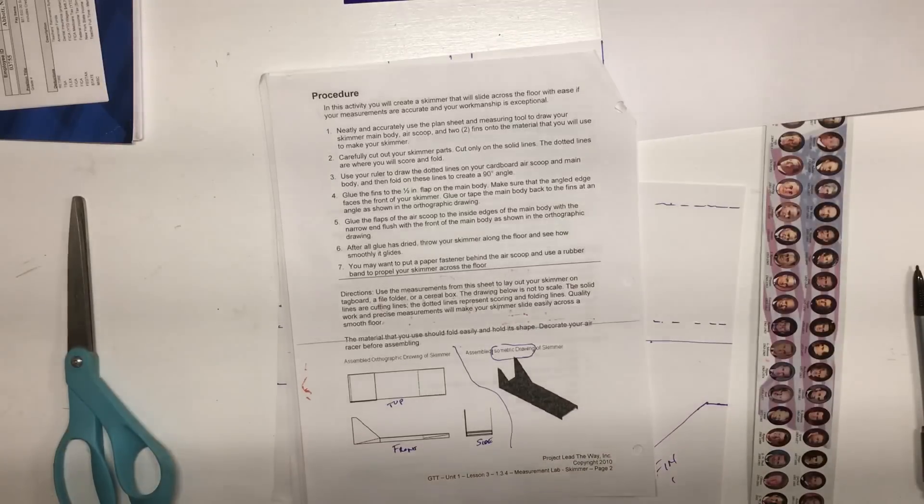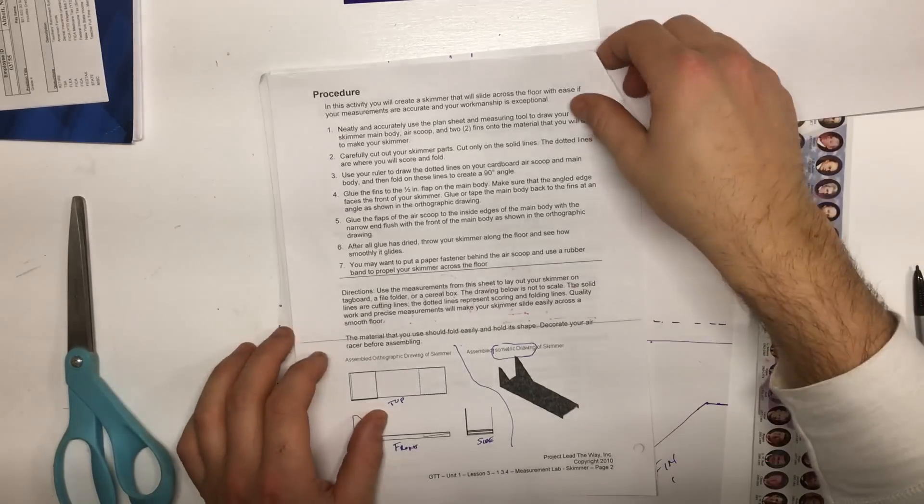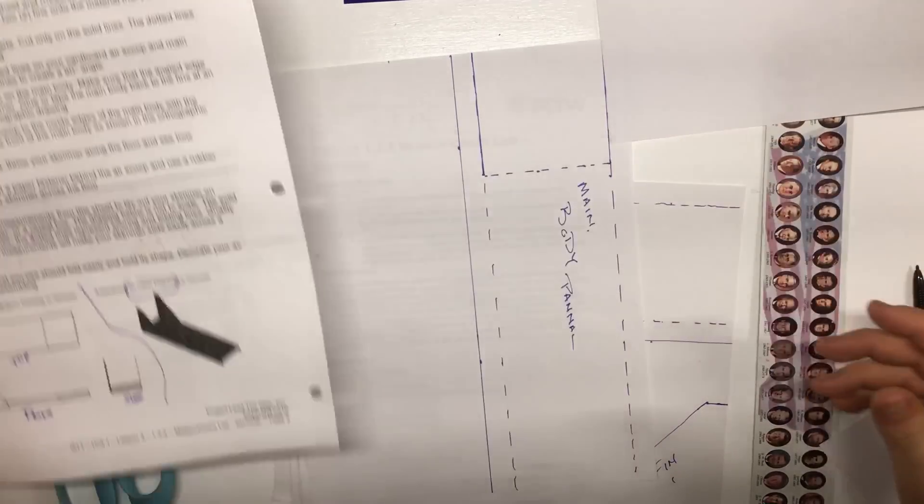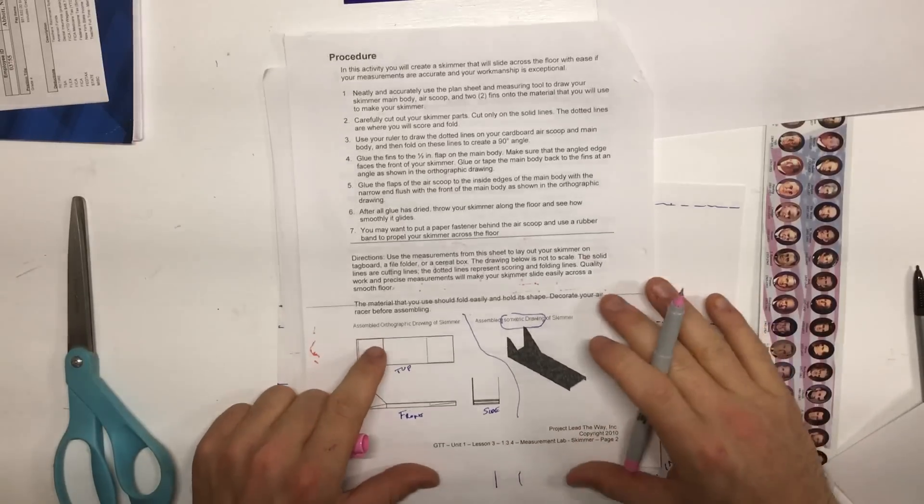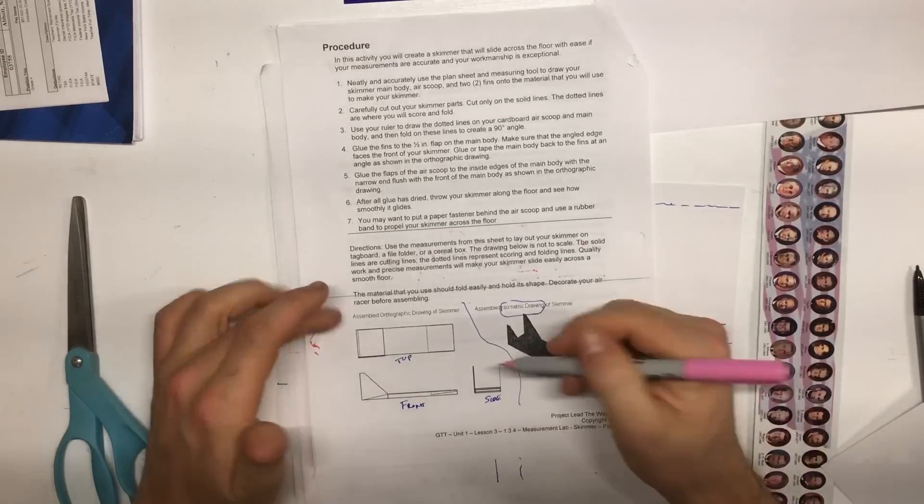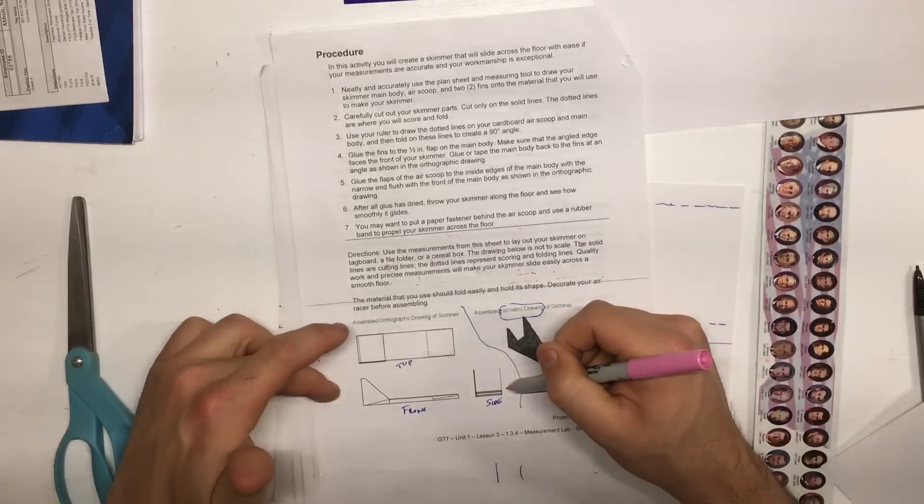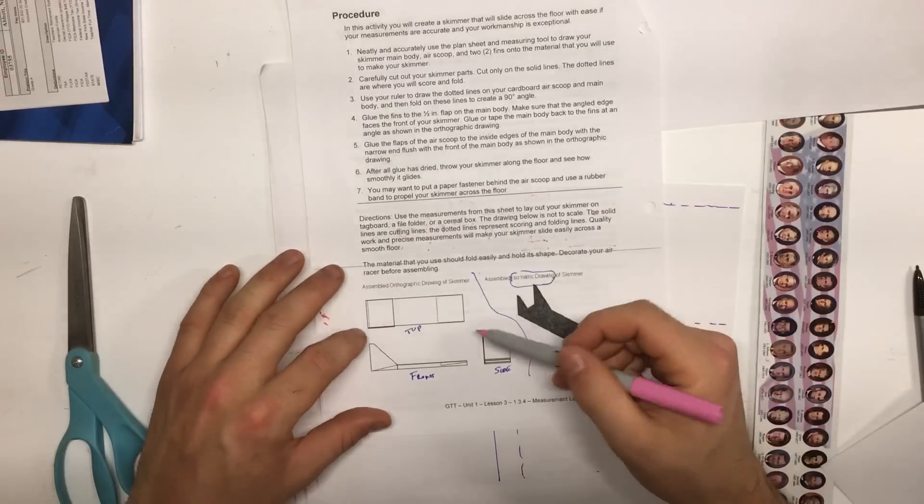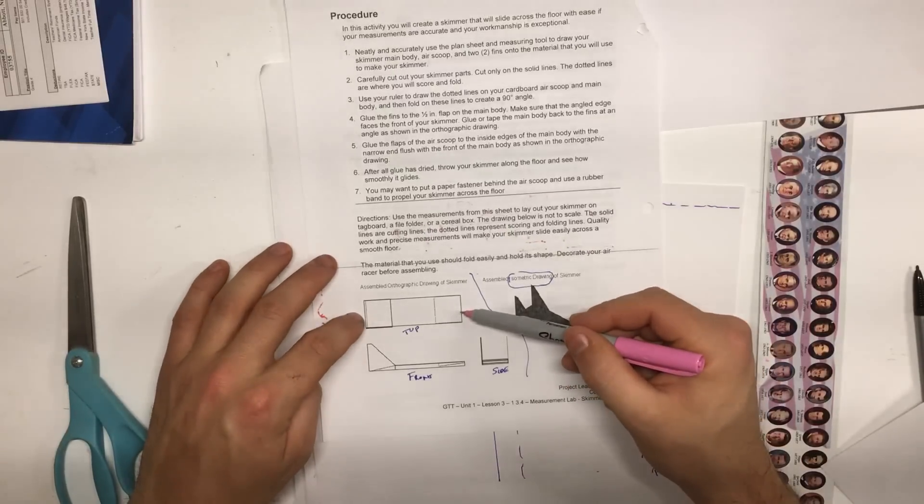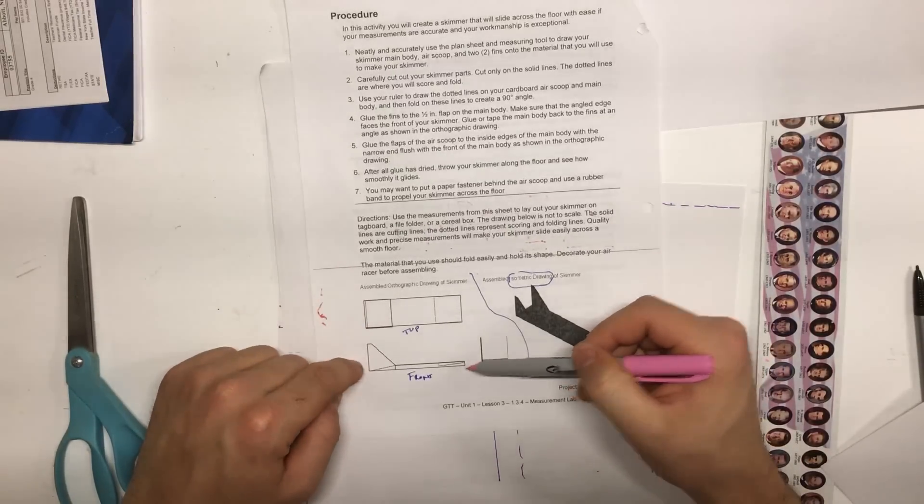We're actually not going to do that exactly how it's written. Today we're going to create a layout or a rough draft of a layout of our skimmer. As you can see right here there are some drawings and I just want to turn your attention. Okay, this right here is an orthographic drawing. We're going to be working on that next unit, but it's good to be familiar with it for now.